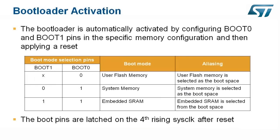The embedded bootloader state machine is invoked by configuring two external pins, boot0 and boot1. The primary bootloader protocol for all STM32 devices is defined for RS-232 over a USART port. The embedded bootloader is activated by configuring pins boot0 and boot1 as follows: to boot from the internal user flash memory, set pin boot0 low.